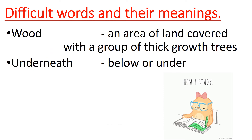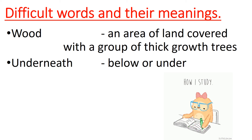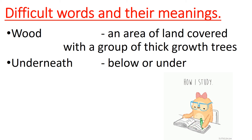Difficult words and their meanings: 'Wood' means an area of land covered with a group of thick-growth trees. 'Underneath' means below or under.